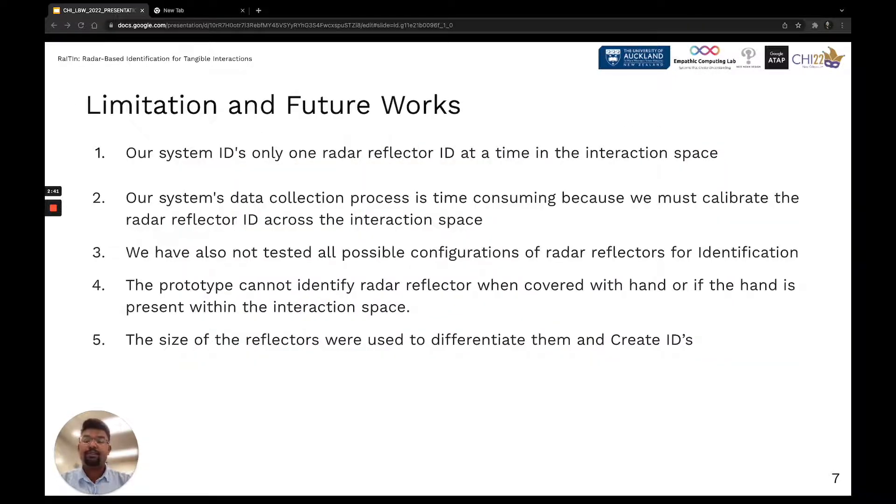Our system has a number of limitations. The main limitation of our prototype is it cannot identify radar reflectors when covered with hand or if hand is present within the interaction space. So, we plan to overcome this limitation by placing another Soli sensor horizontal to the table and train the machine learning algorithm with hand reflections.